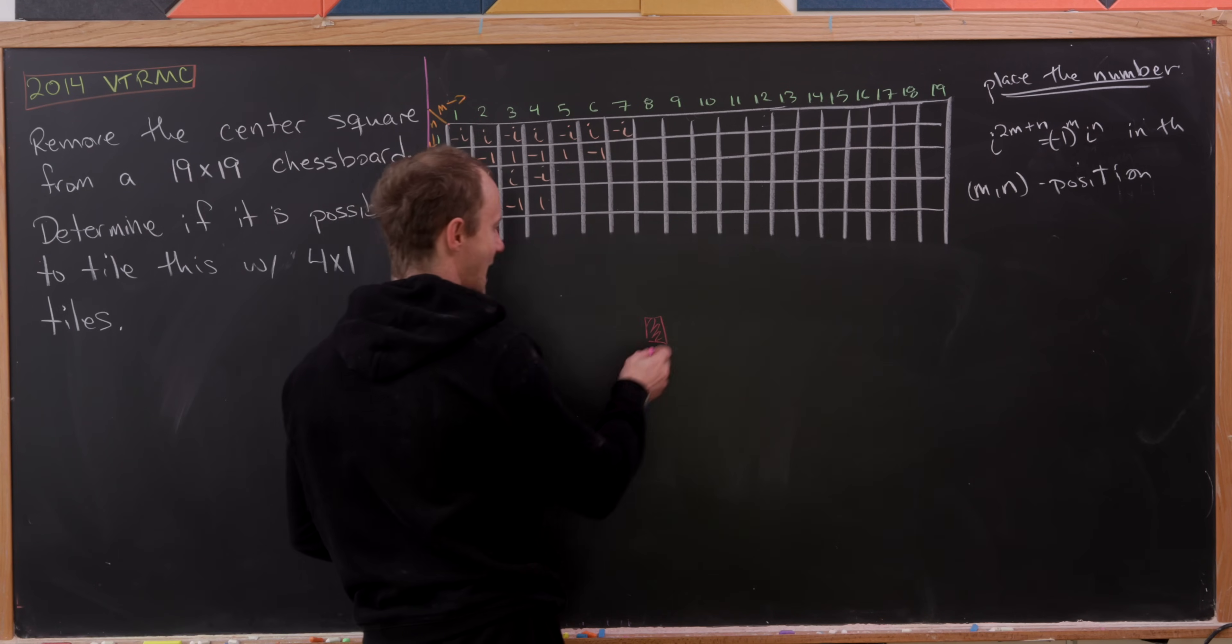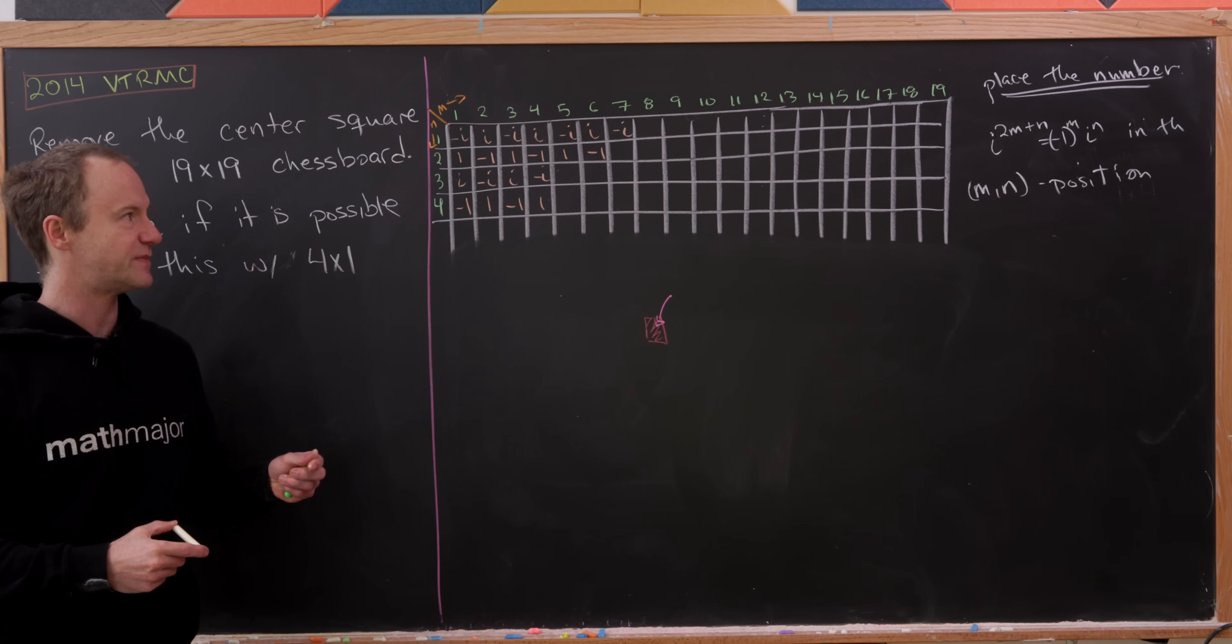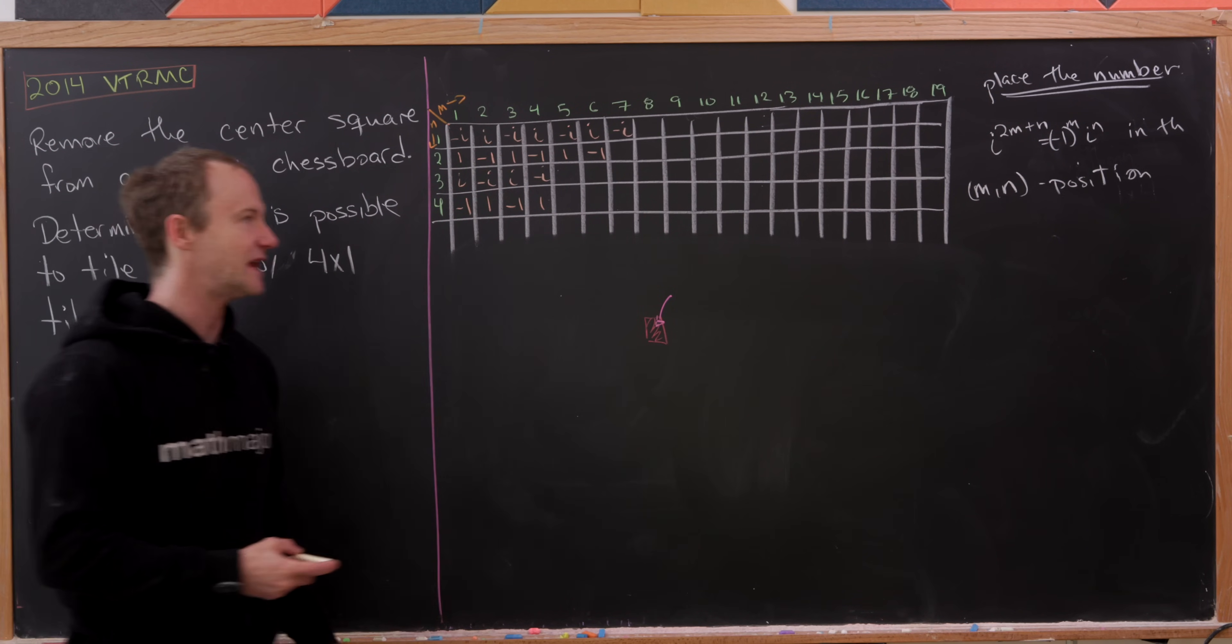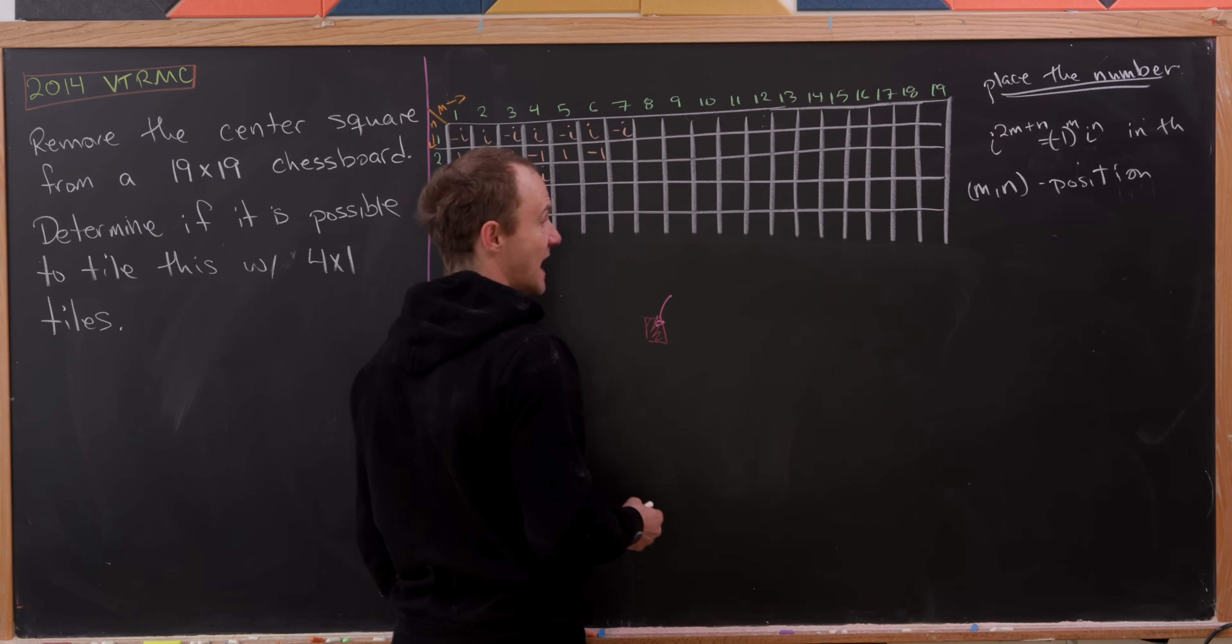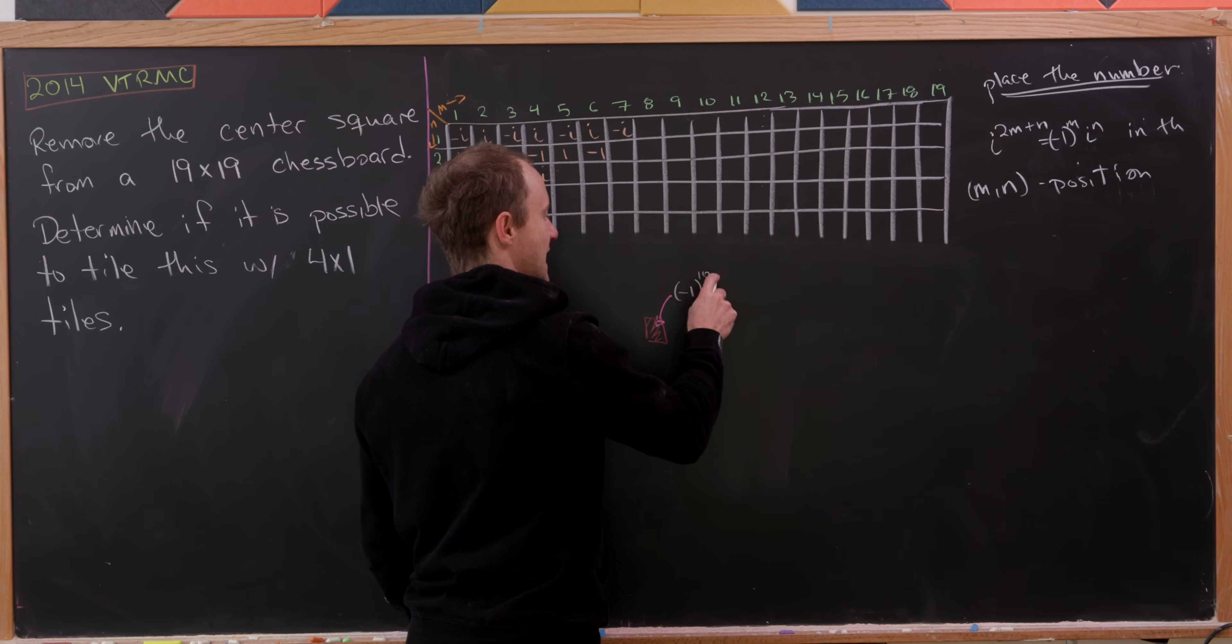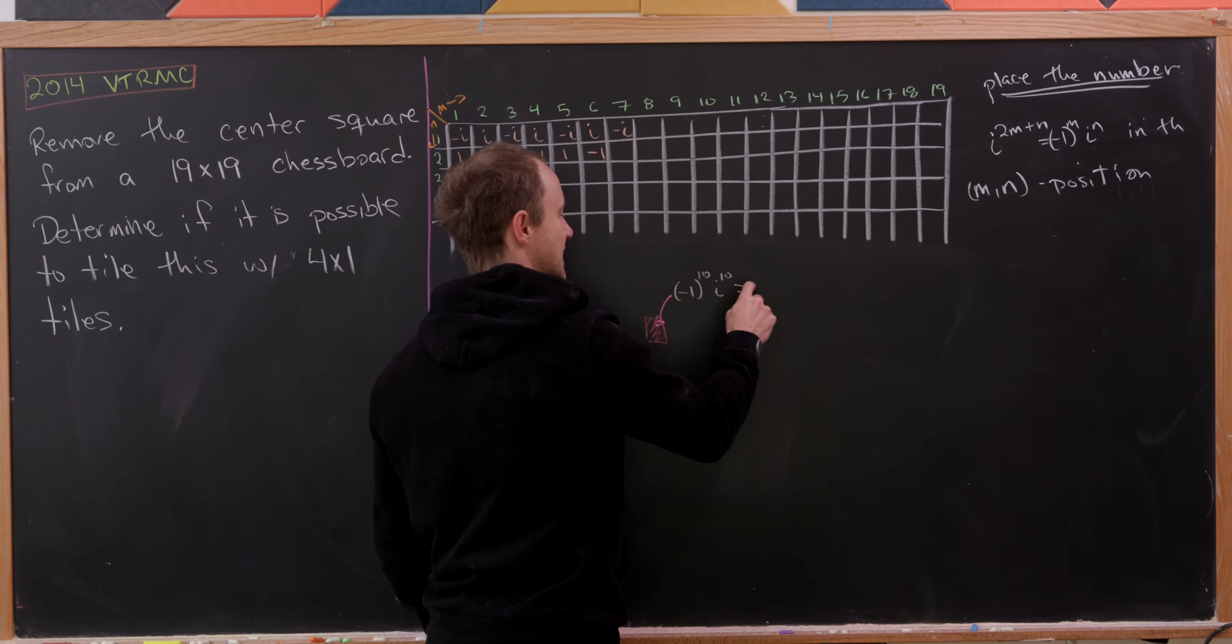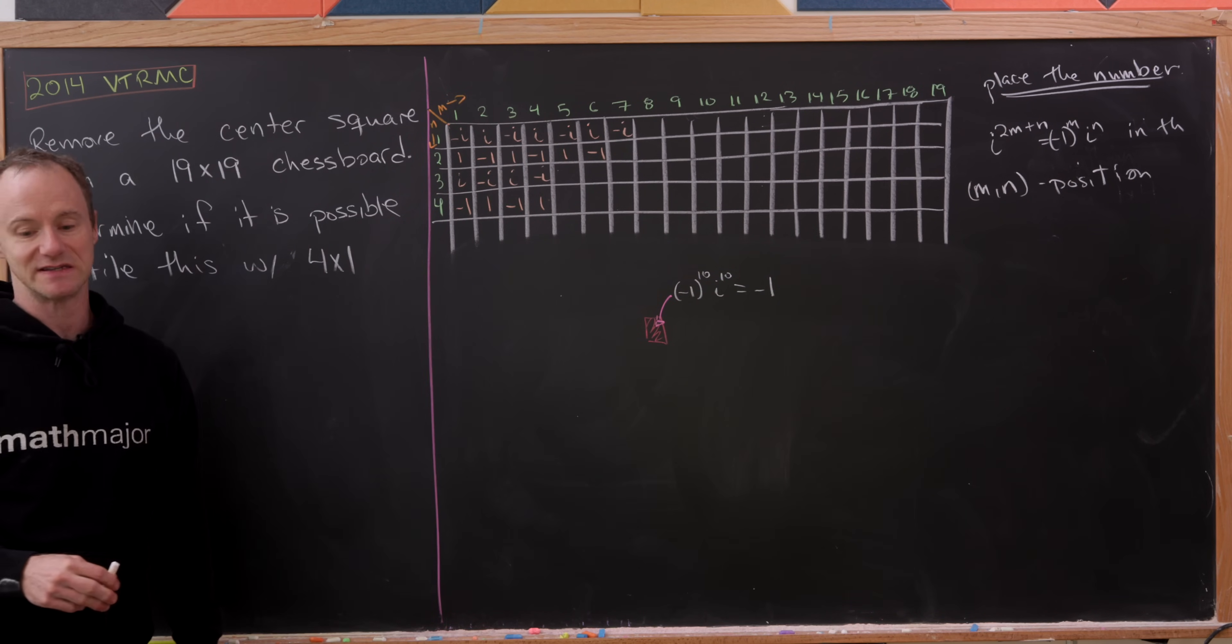And now let's look at what's happening in the deleted square. So notice the deleted square is the position m equals 10, n equals 10. We can plug 10, 10 into that formula and we'll have minus 1 to the 10 times i to the 10. But that's pretty clearly equal to minus 1. So that's what's deleted.